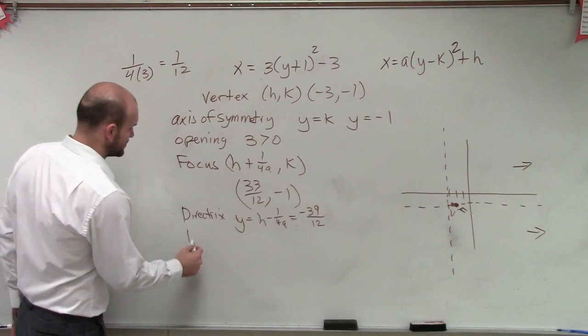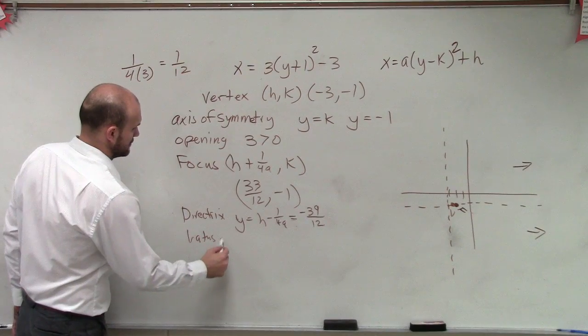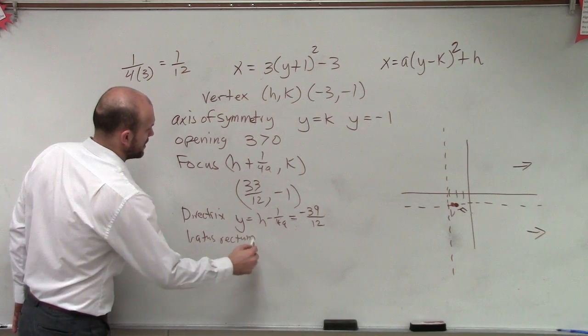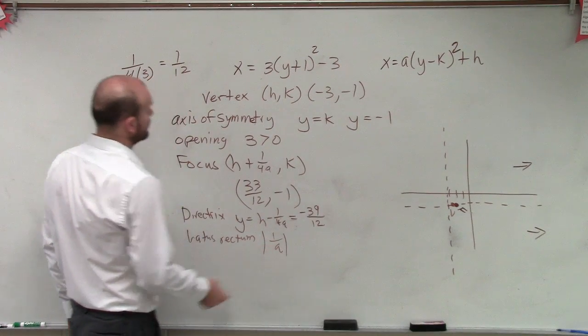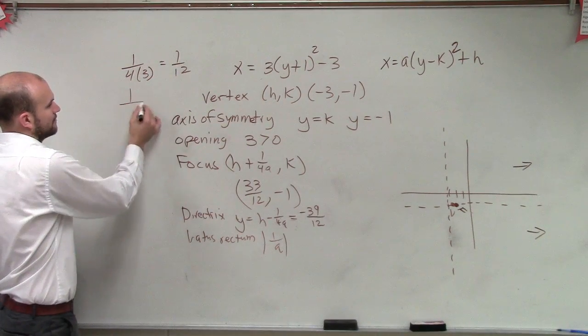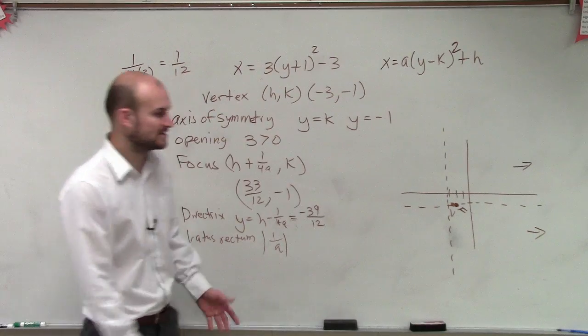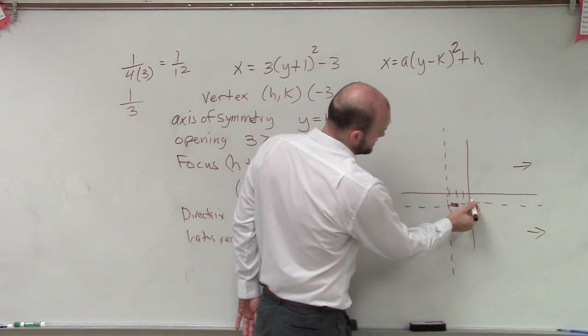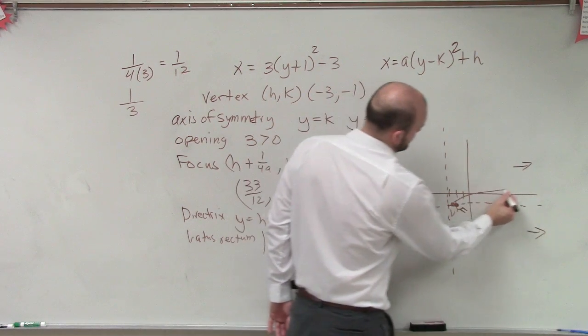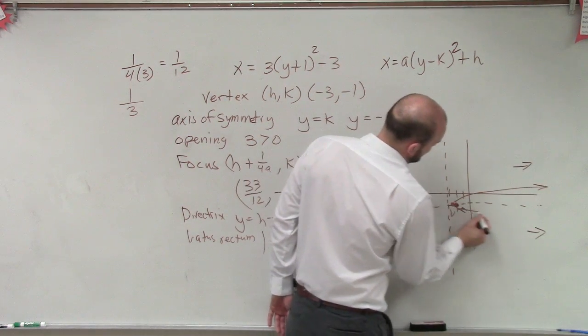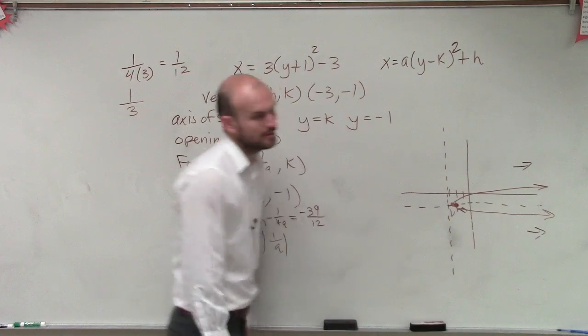Then we can determine the latus rectum, and remember the latus rectum is going to be absolute value of 1 over a. Well, 1 over a is 1/3rd. So therefore, our distance of our latus rectum is really, if this is down negative 1, it's like 1/6th of the way. So you're going to have a very skinny parabola.